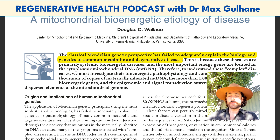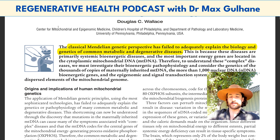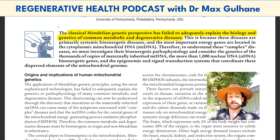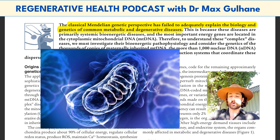The reason I wanted to talk about this paper particularly is that this is where Dr. Cruz has got that bioenergetic perspective from, which is Dr. Don Wallace. So let's have a read of this paper and try to understand exactly what Dr. Wallace is saying. In this paper he says: 'The classical Mendelian genetic perspective has failed to adequately explain the biology and genetics of common metabolic and degenerative diseases. This is because these diseases are primarily systemic bioenergetic diseases, and the most important energy genes are located in the cytoplasmic mitochondrial DNA.'